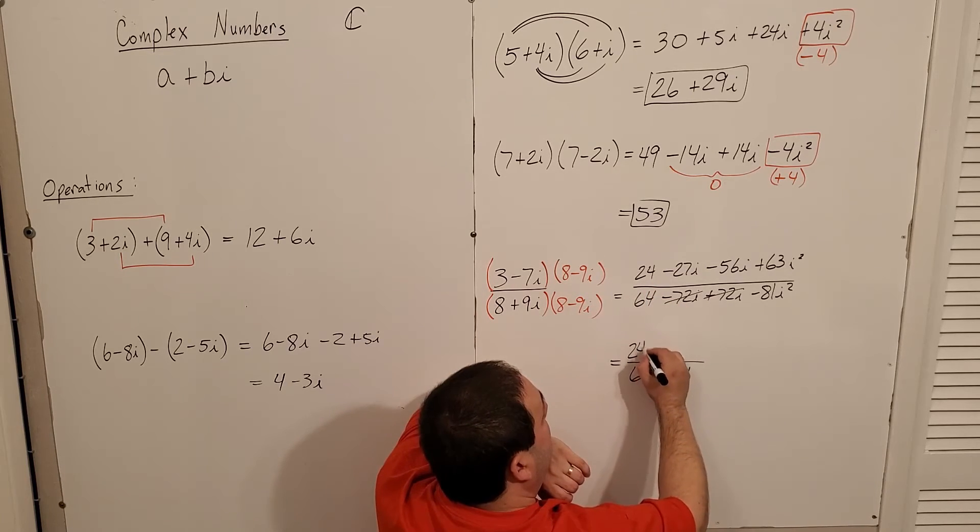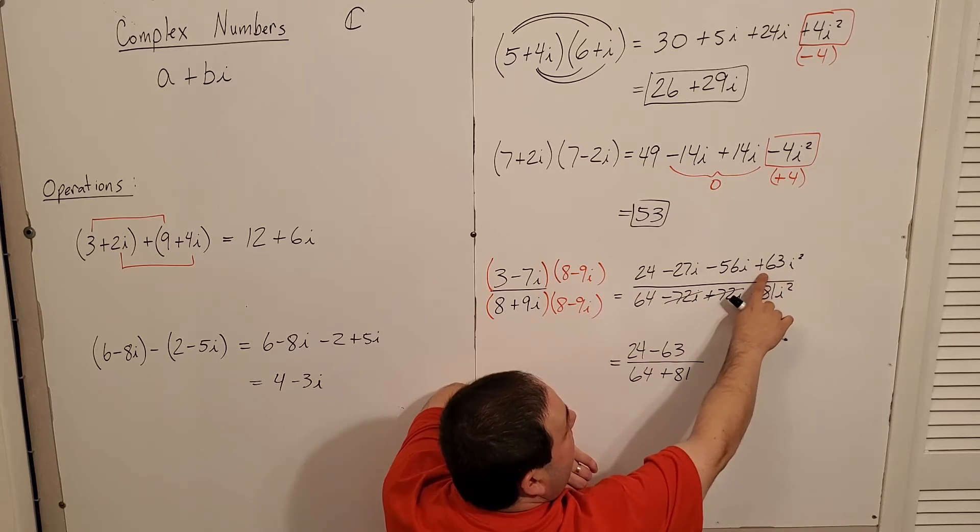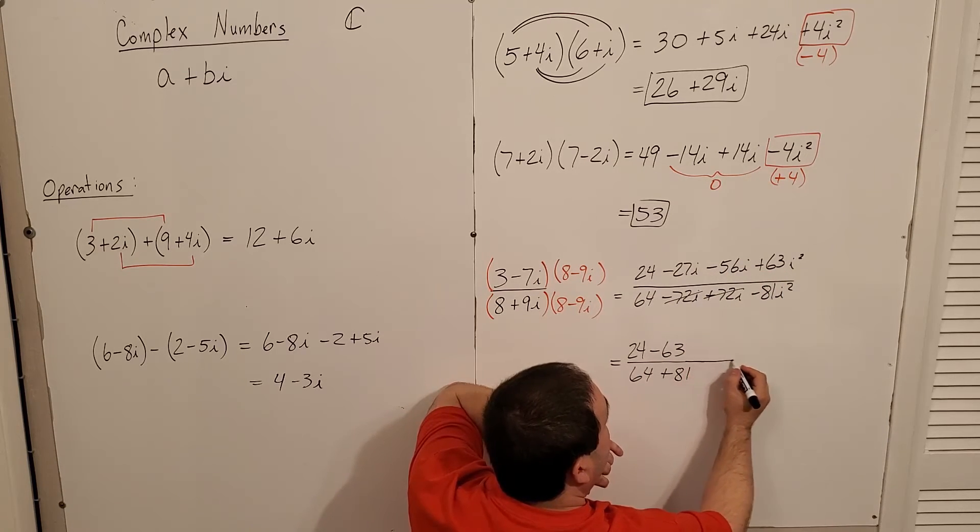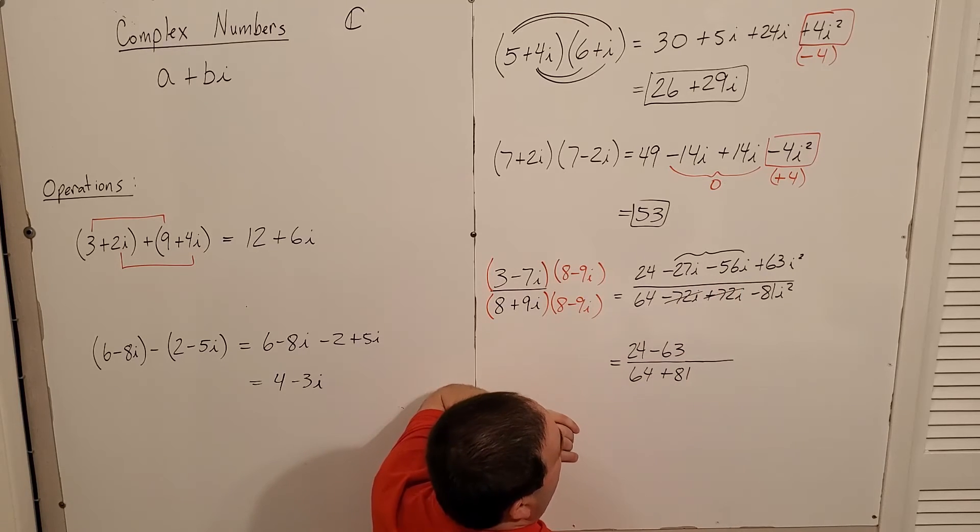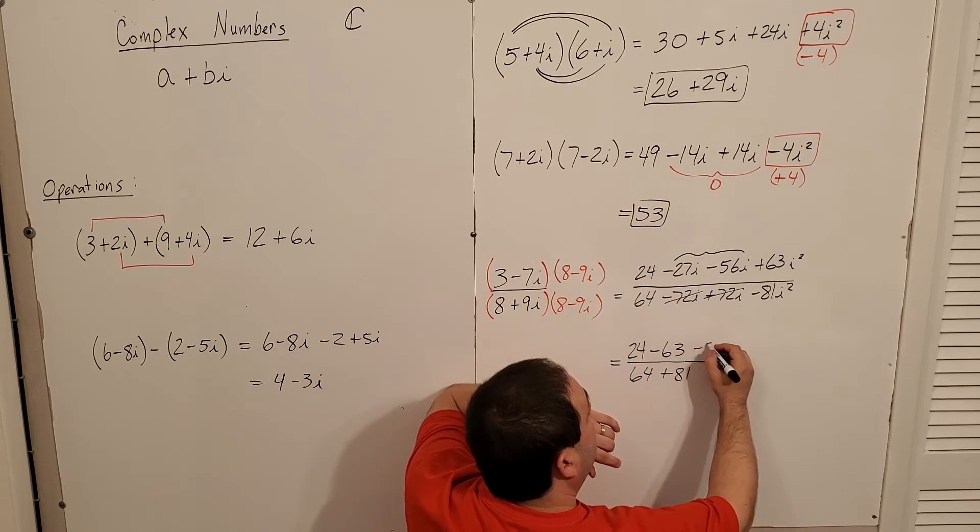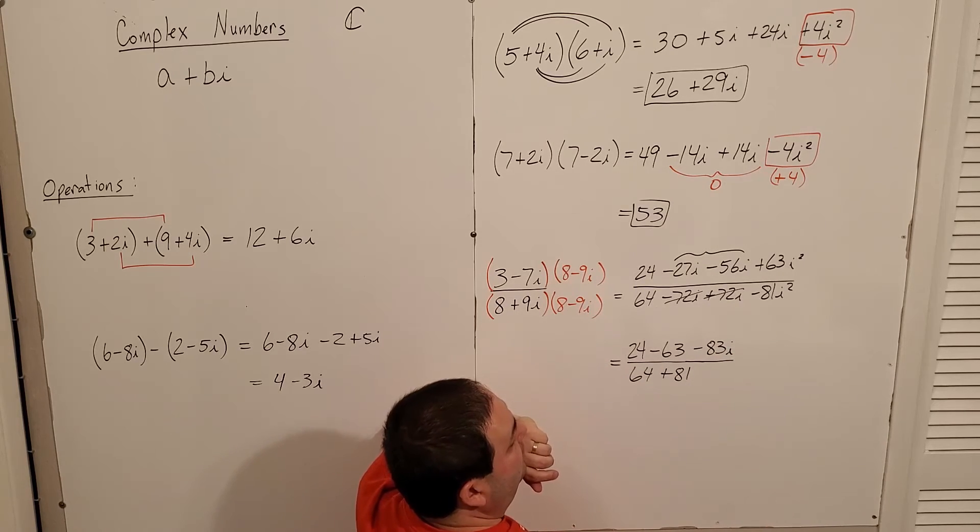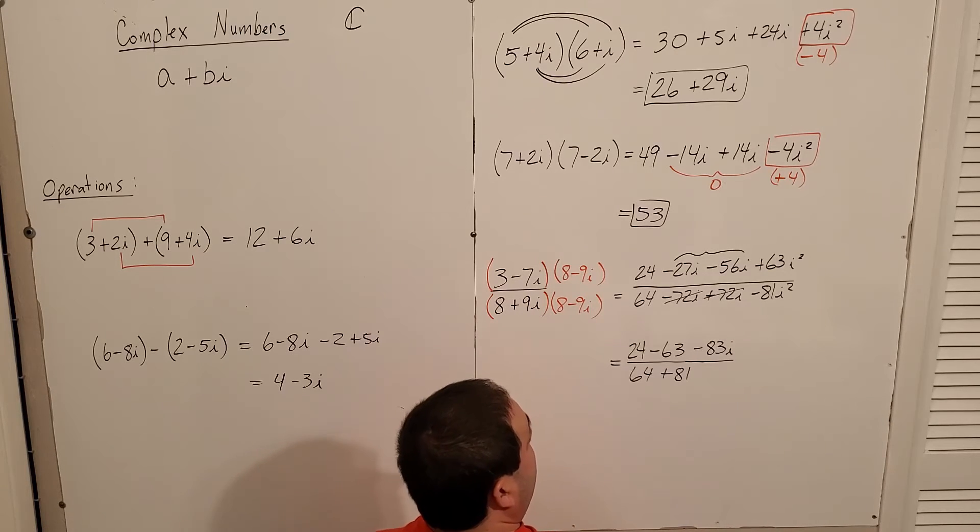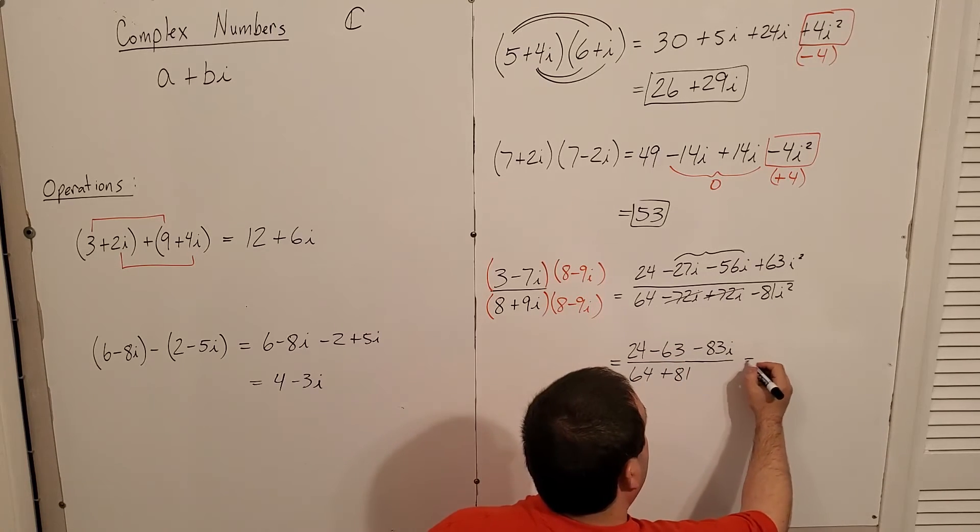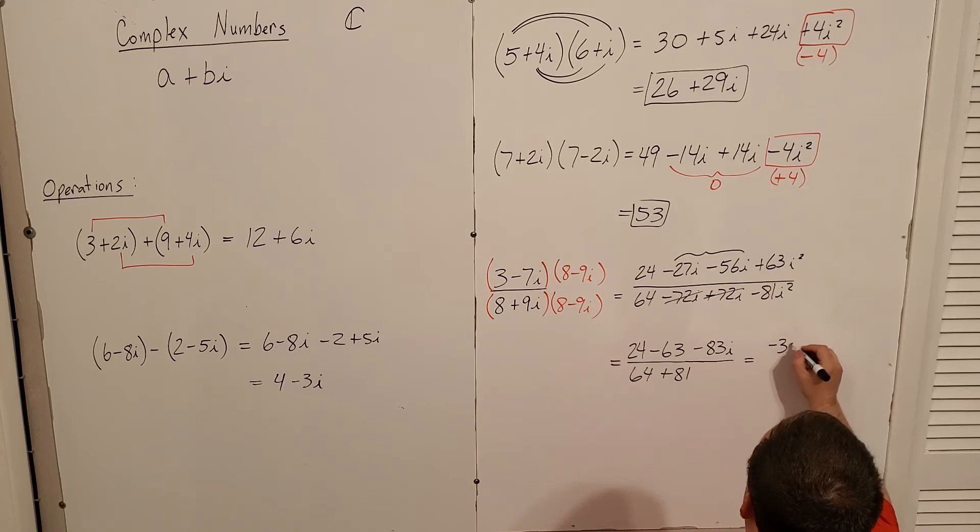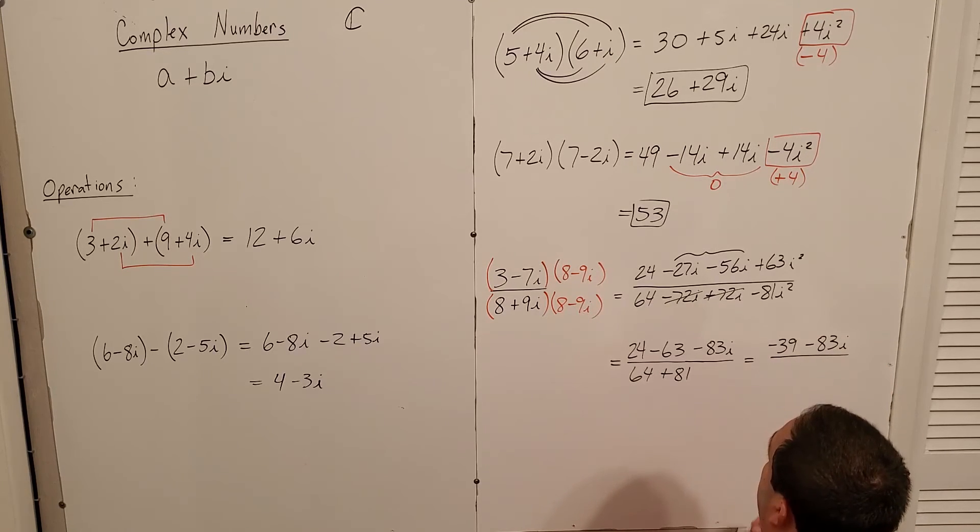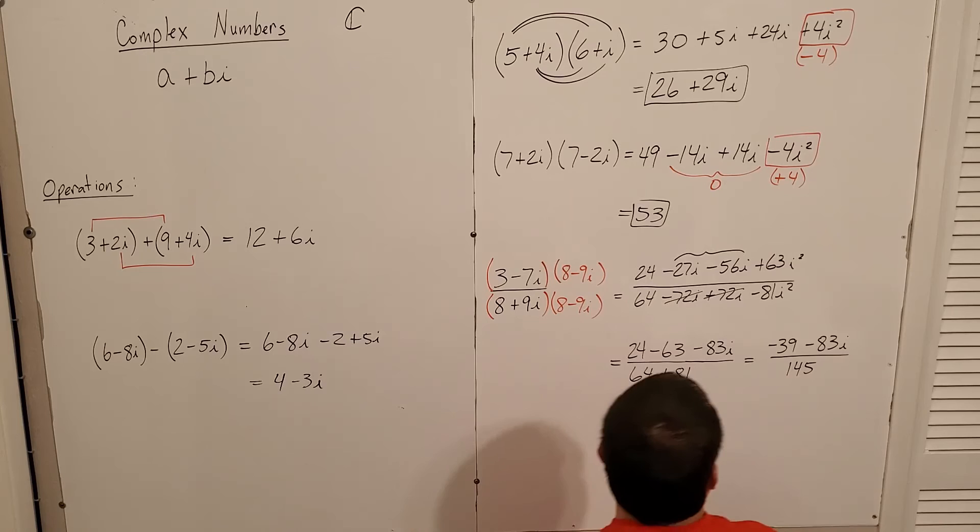In the top, I'll have 24 minus 63, because i squared is negative 1. And these two are already like terms. Negative 27i minus 56i, so that's negative 83i in the numerator. Let's finish it up. By combining these, I would have negative 39 minus 83i over 64 plus 81, I have 145.